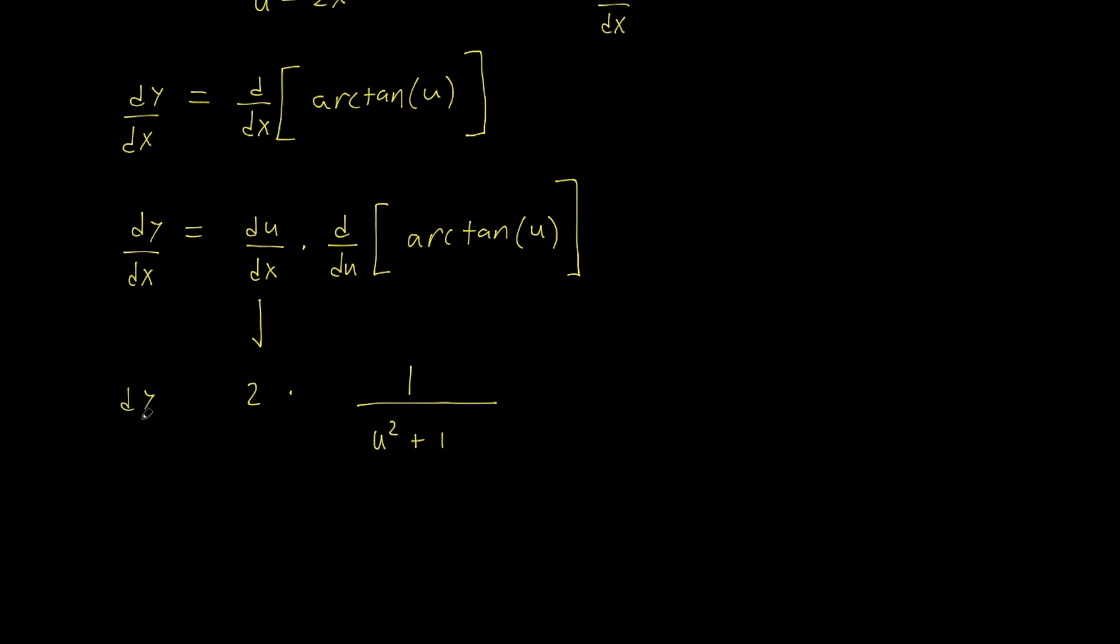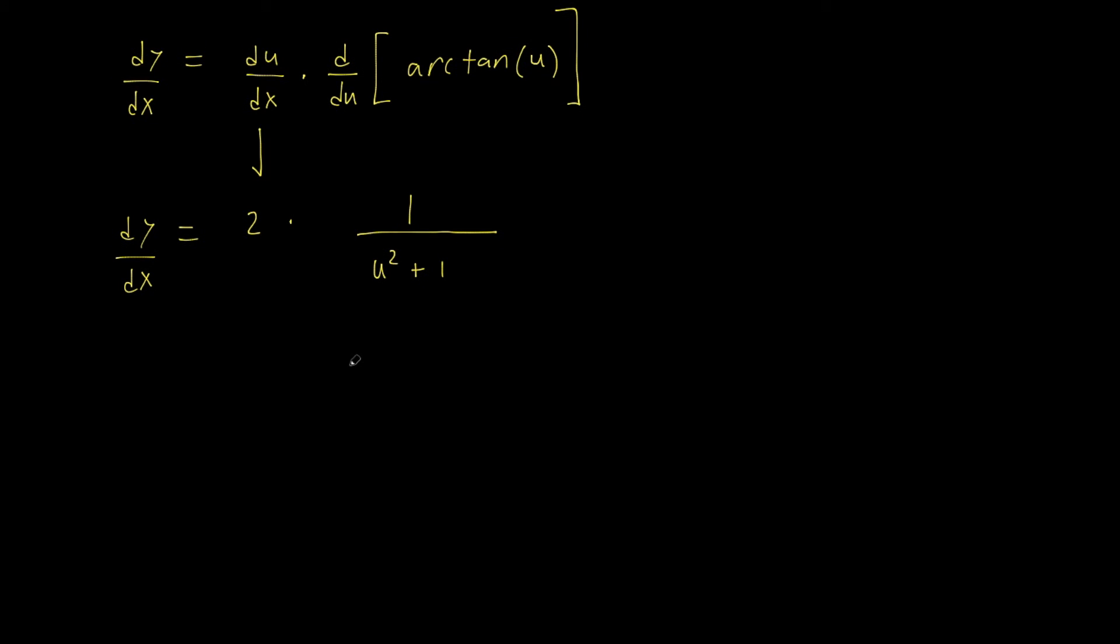And then we have one final line to write. That's going to be dy/dx equals 2 over u squared plus 1. Now u is 2x, so we have 2x squared plus 1.